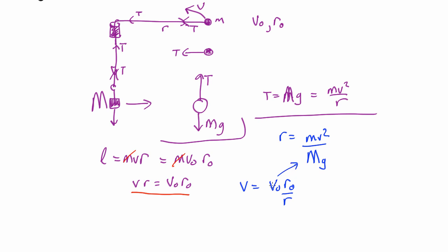So substitute that into here, and we end up with r equals m over Mg times v squared. v0 r0 squared over r squared.